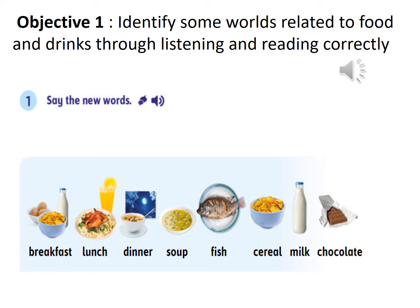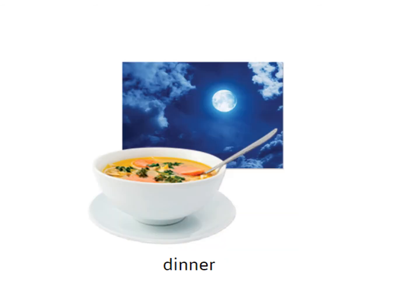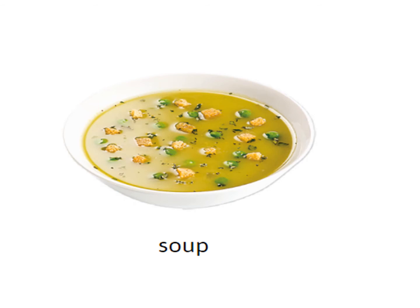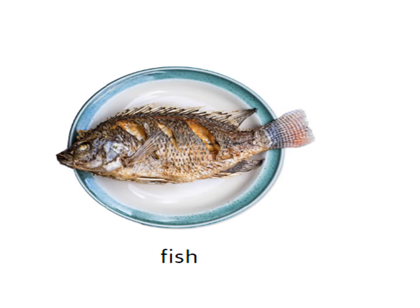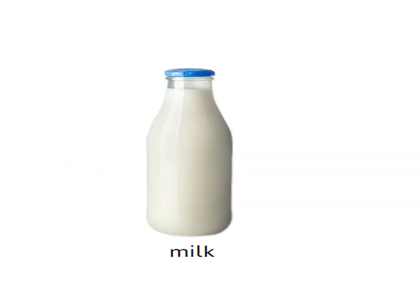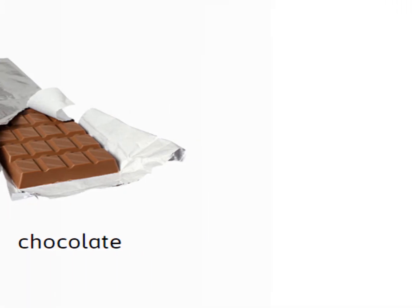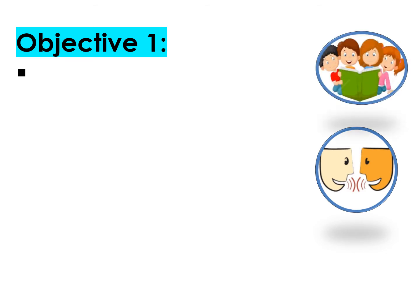I'm going to display pictures and I want you to try to identify the words. Who can say it? Breakfast. Who can say it? Lunch. Who can say it? Dinner. Who can say it? Soup. Who can say it? Fish. Who can say it? Cereal. Who can say it? Milk. Who can say it? Chocolate. In this way we identified some new words related to foods and drinks. Objective number one is done.